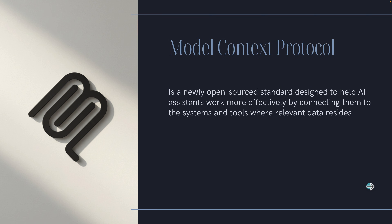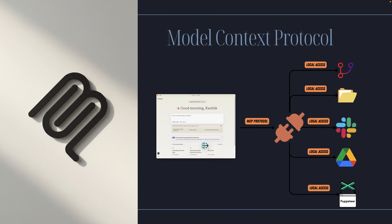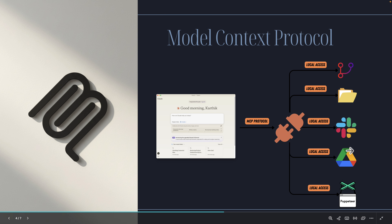What exactly is a Model Context Protocol server if you have never heard about it before? Model Context Protocol server is a newly open-source standard which is designed to help AI assistants work more effectively by connecting them to the systems and tools where relevant data resides. It works as a client-server architecture — a Model Context Protocol server has a client which spawns prompts and requests following the protocol, and then it uses different servers which can help you access local file systems, GitHub repositories, Slack, Puppeteer, Playwright, Google Drive — whatever you want. It's just like a USB of a large language model that plugs in with different tools and performs actions on those systems.